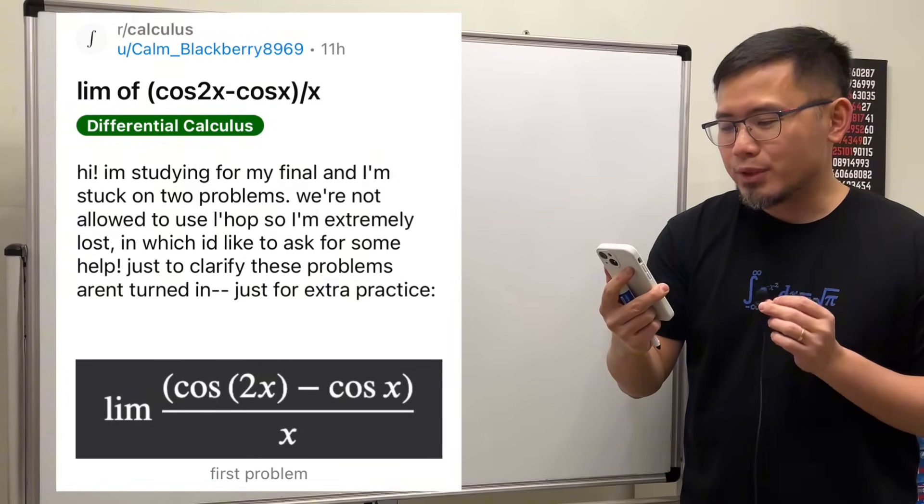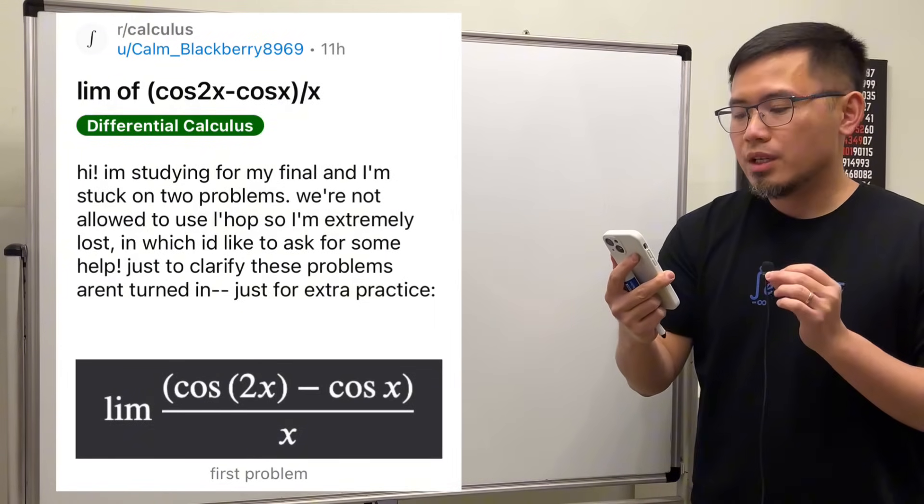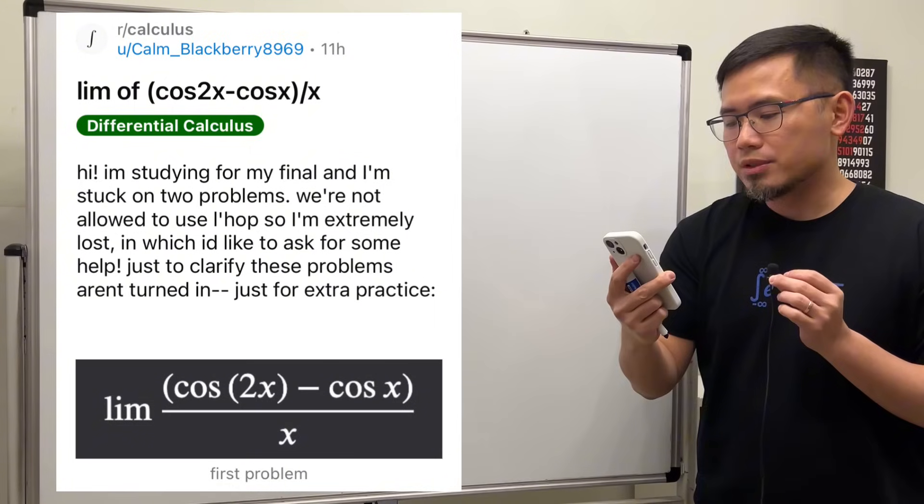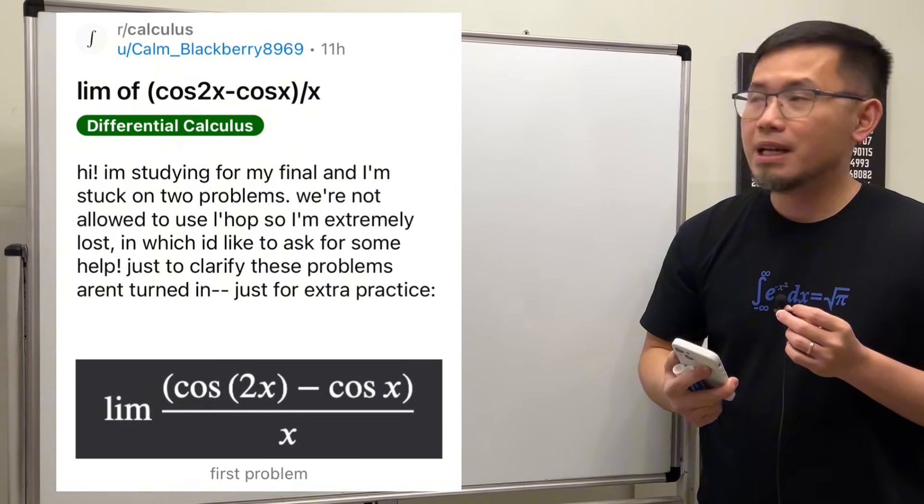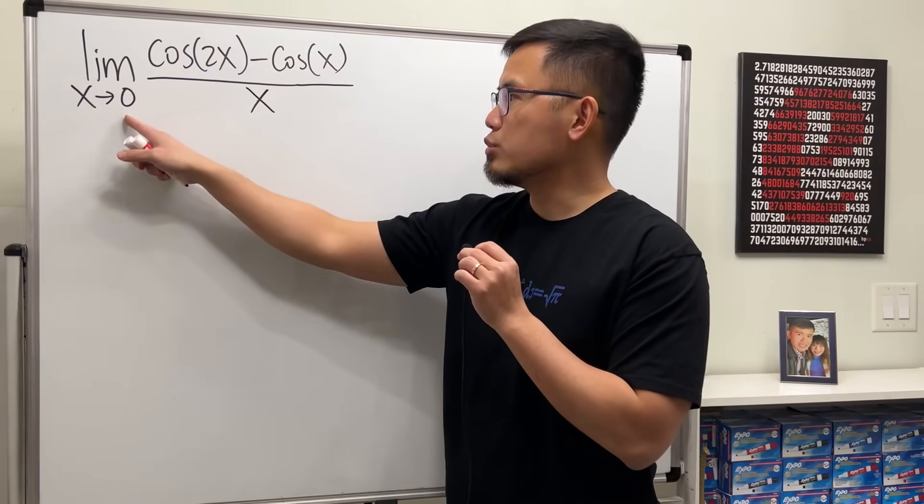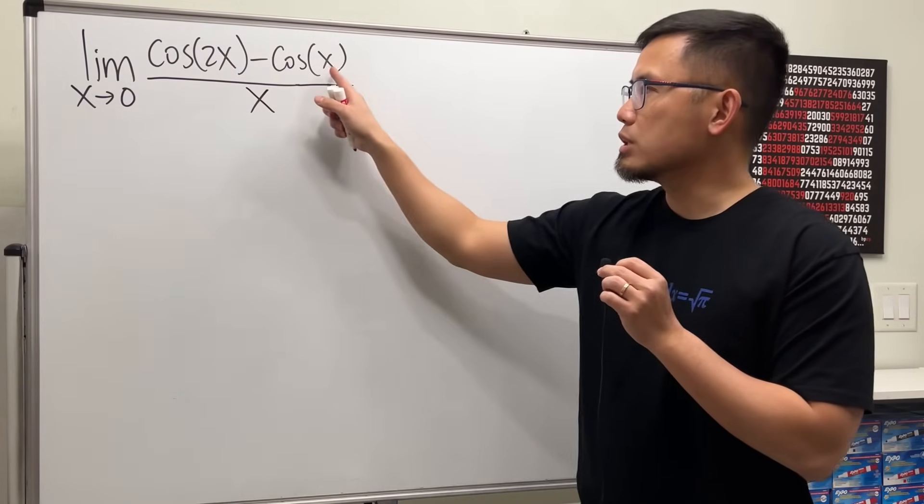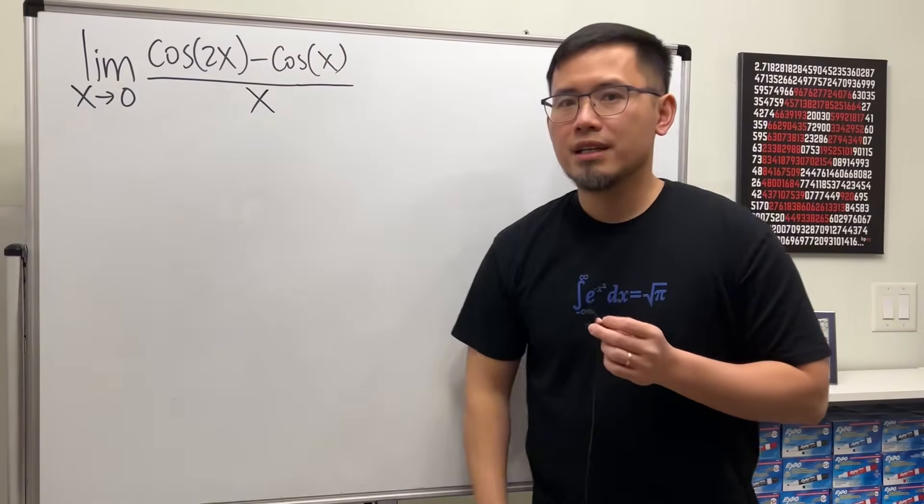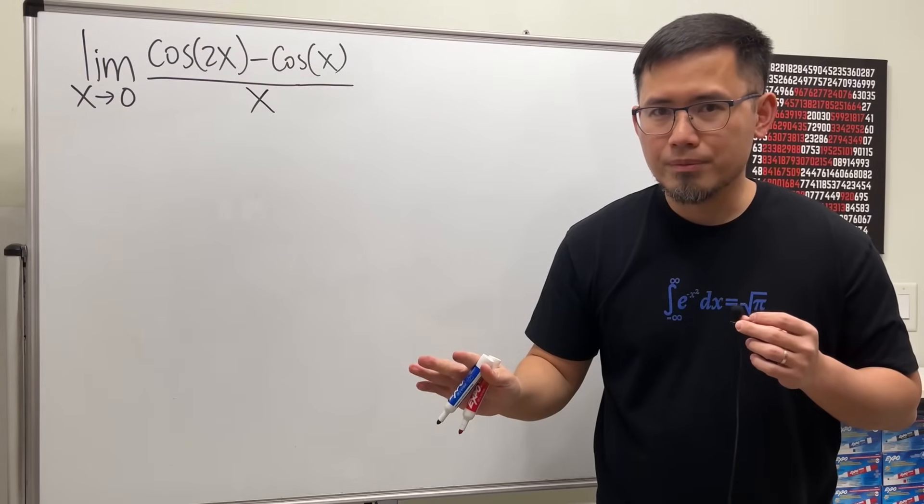Hi, I'm studying for my final and I'm stuck on two problems. We are not allowed to use L'Hôpital's rule, so I'm extremely lost. Let's take a look at this one first. We have the limit as x approaches zero of cosine of 2x minus cosine of x, all over x.